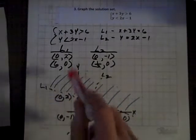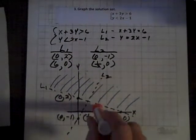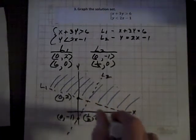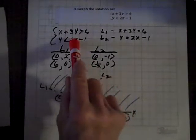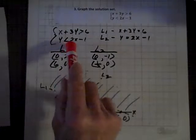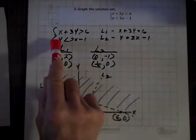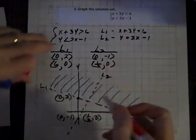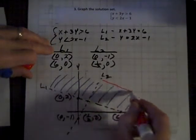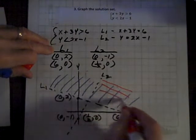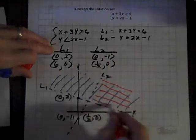Let's pick a point to the right. How about 6, 0? If we let X be 6 and Y be 0, well, 2 times 6 is 12, minus 1 is 11, and 0 is less than 11. So any point to the right of L sub 2 will satisfy that second inequality.